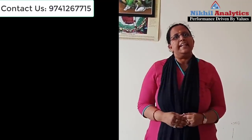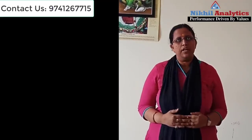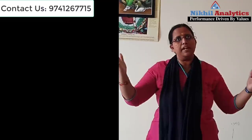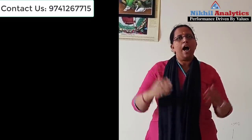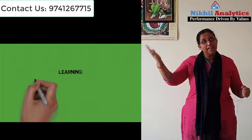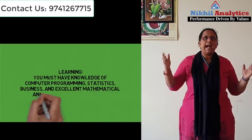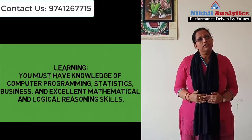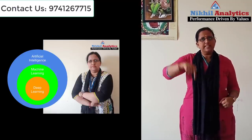Fifth component: technology used by Peter Brand. Peter wrote a computer program to do year-on-year projections and scoring for each player. He also performed visualization of each player's data using data visualization tools, and discussed with Billy and the players how performance could be improved and which lineup could lead to winning matches. Learning: you must have knowledge of computer programming, business, statistics, and excellent mathematical and logical reasoning skills. More on this, you can watch my video on analytics, data science and machine learning skills required — the link is in the description below.